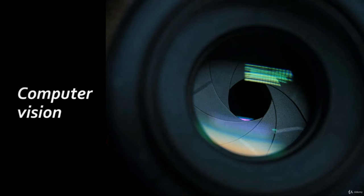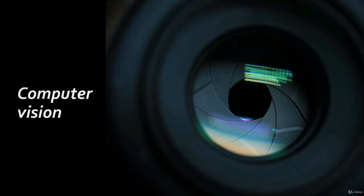Hello everyone, welcome back to our course on computer vision. Today we are going to talk about geometric shapes - how we can draw lines, squares, and rectangles on our images, or how to write something on an image like a caption or a name. Let's get onto our IDE and see how we are going to do all of this.